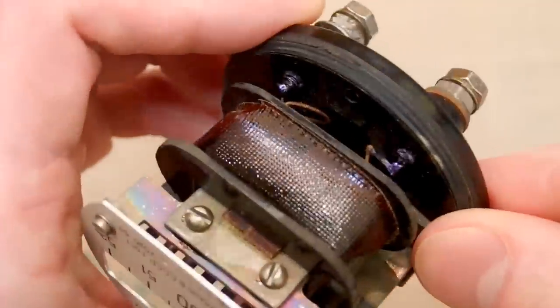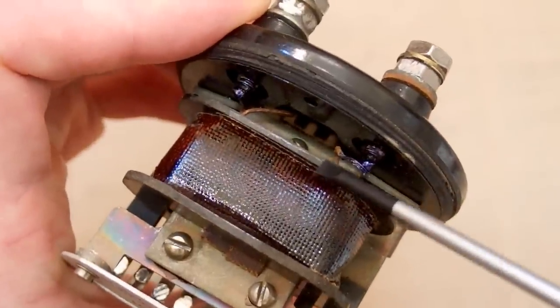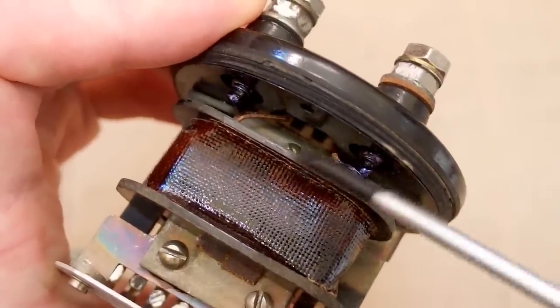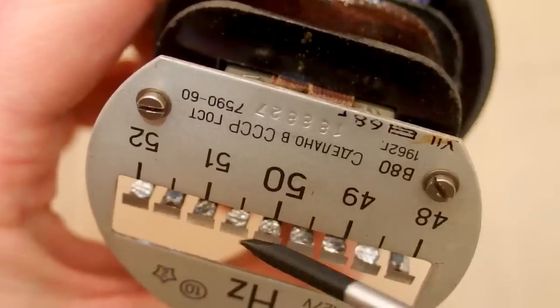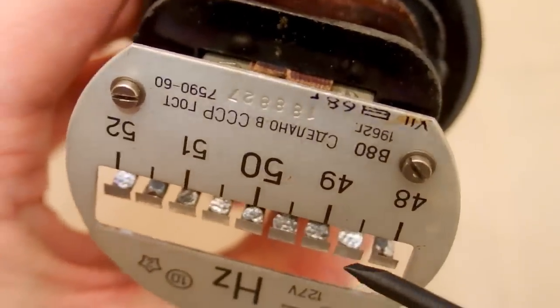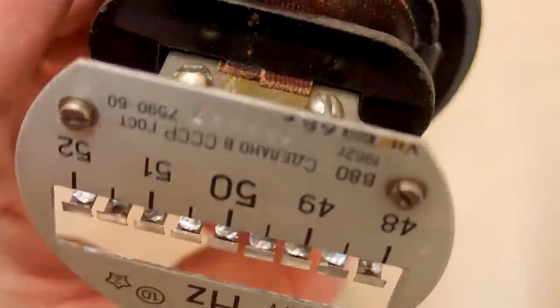And here you can see the terminals of the coil going from here into those screws. And here you can also see the weights on the reeds which are probably blobs of solder.